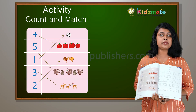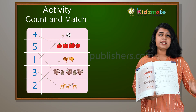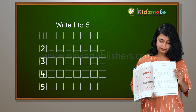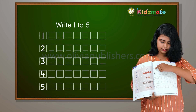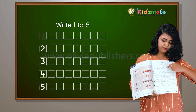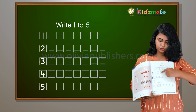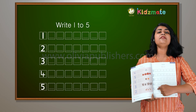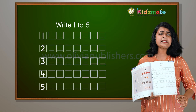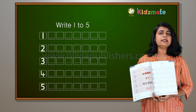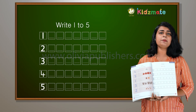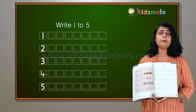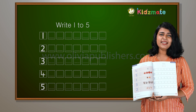Now you should write the numbers 1, 2, 5. In the first line you have 1, we have 2, we have 3, 4, and 5. You have to look at the parents', okay? Alright.